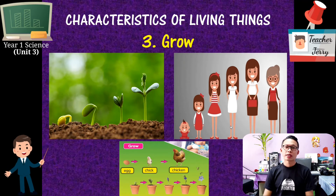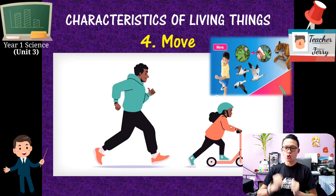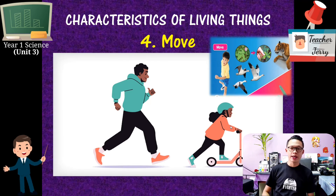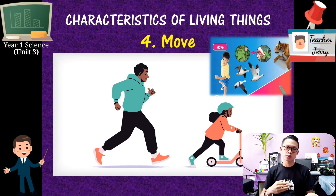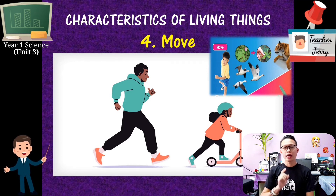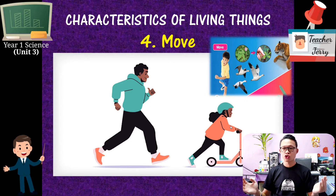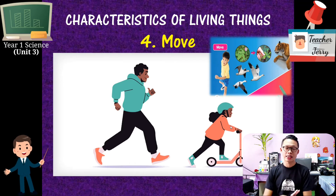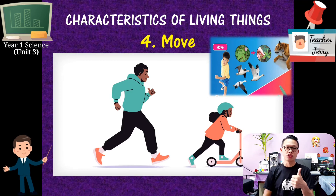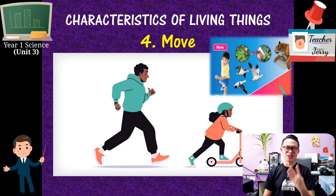The fourth characteristic is we move. We move here and there — we can run, jump, go to school, jog, play skateboard, ride a bicycle. In Bahasa Melayu, move is 'bergerak.' We move freely without being controlled by anything. So: first, need food and water; second, we breathe; third, we grow; fourth, we move.